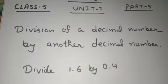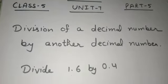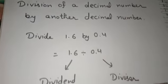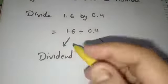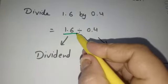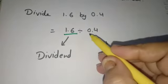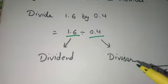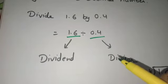Divide 1.6 by 0.4. 1.6 divides 0.4 means the first number, this 1.6, is called dividend and this 0.4 is called divisor.